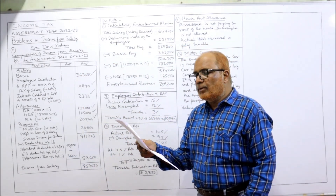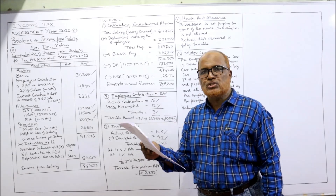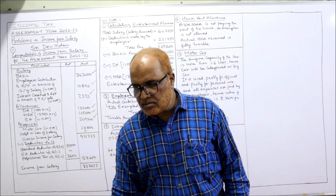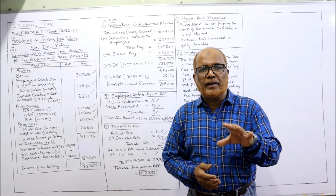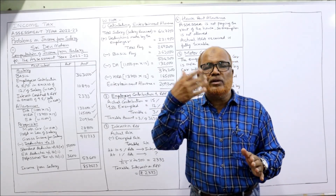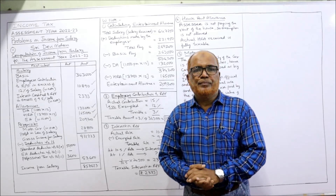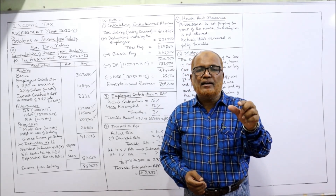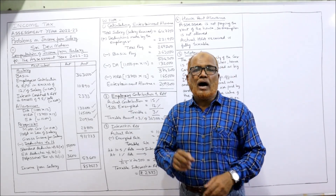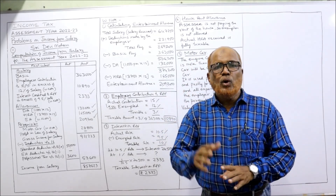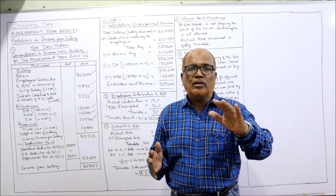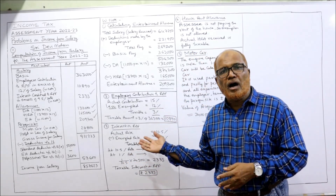The assessee is provided with a motor car of 1.75 liters engine capacity for both personal and official use, and the employer pays all expenses. Motor car is a taxable perquisite for specified employees. The assessee is a specified employee because his salary income is more than fifty thousand. Since the engine capacity is 1.75 liters — which exceeds 1.6 liters — this is categorized as a big car.